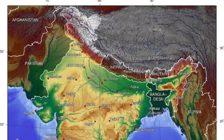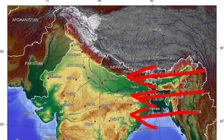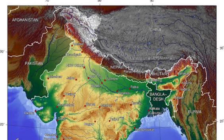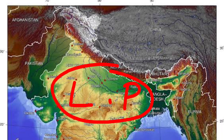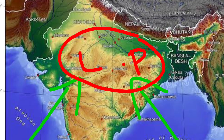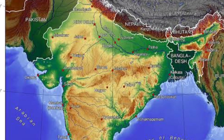Another factor is the development of low pressure. During the summer months, the central part of our country receives direct rays of the sun, which causes temperature to increase. With the increase of temperature, low pressure develops in the central part of our country. This low pressure helps in attracting the monsoonal winds from the surrounding seas. In this way, the development of low pressure affects the climate of our country.